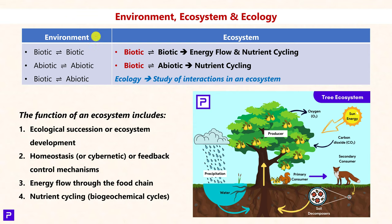Coming to the basics — in the previous videos we have seen what environment and ecosystem are. Environment is the natural component in which biotic and abiotic components interact among themselves and with each other. The ecosystem is very similar, except that in an ecosystem the biotic components play a major part. The study of all these interactions taking place in an ecosystem is what we term as Ecology.